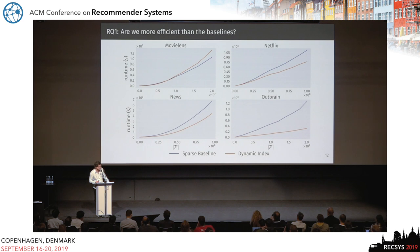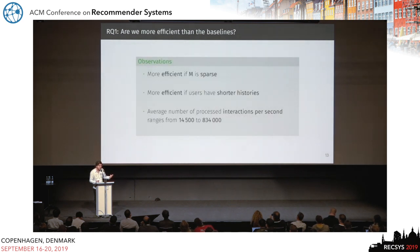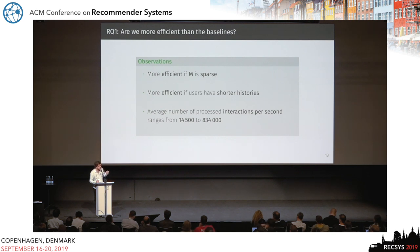Looking at the runtime on a single core, when we assume the entire item catalog is going to be recommendable, you can see that we're better than a baseline that was also tuned for the sparse setting. For the MovieLens dataset we're not that much faster, but we do have the advantage of working incrementally — if you had to recompute halfway through, we would only need delta T, whereas the baseline would have to recompute from scratch. The main observation is that this is very efficient when the co-occurrence matrix is sparse. It doesn't matter if the user-item matrix is sparse; what matters is that if most co-occurrences are zero, you can exploit that. It's also more efficient if users have short histories, and we can process a few hundred thousand user-item interactions per second on a single core.